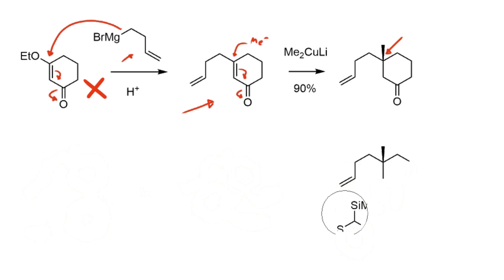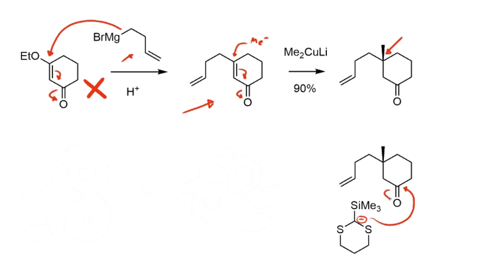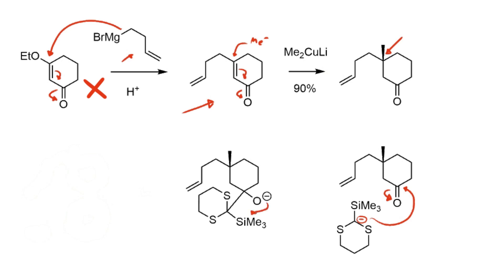The next step is the first really interesting reaction in the synthesis. They make use of a trimethylsilylated thioketal. Sulfur and silicon can both stabilize alpha-anions, so this can be deprotonated with a strong base like butyllithium, and then this carbanion can add into the carbonyl. The rest of the reaction pathway is essentially the same as the Peterson olefination — either concerted or stepwise, the oxygen negative charge attacks the silicon, these electrons reorganize, and we lose TMSO⁻.